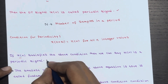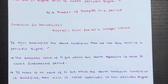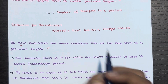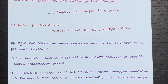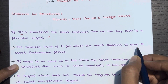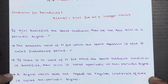If X(n) satisfies the above condition, we say X(n) is a periodic signal. Now let's talk about the fundamental period. This is the smallest value of N for which the equation X(n + N) = X(n) is true — it's like the heartbeat of the signal, the rhythm that keeps it going. The smallest value of N for which the equation is true is called the fundamental period.